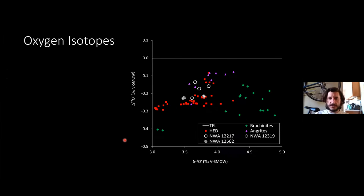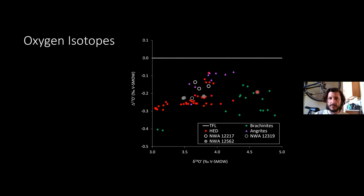The oxygen isotopes of these meteorites plot in the vicinity of the HED meteorites, the brachinites, and the angrites. Here is the terrestrial fractionation line at delta-17O = 0. These plot essentially such that they could be associated with any of these groups or from their own parent body. This essentially rules out any association with the ureilites — they're nowhere near that field.